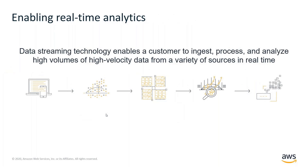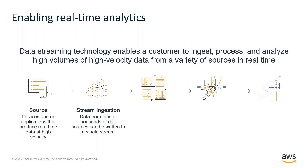We can look at streaming analytics by breaking down the components that make up a streaming analytics workload. Starting on the far left with the source: sources can be devices like mobile devices or web applications that generate clickstream data. This type of data is generated at a high velocity and needs to be captured in a reliable fashion, which requires something like the stream ingestion layer shown here. Reliability is important because if you lose messages generated from the source, the analytics value on the far right of this workflow is reduced.